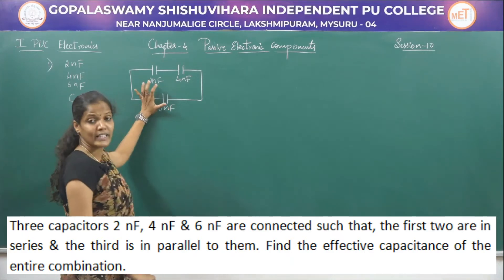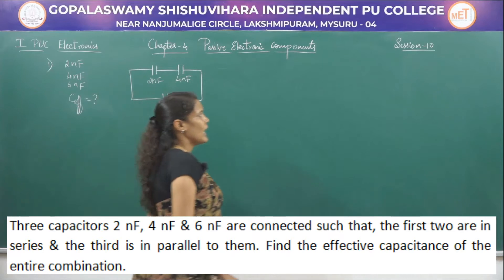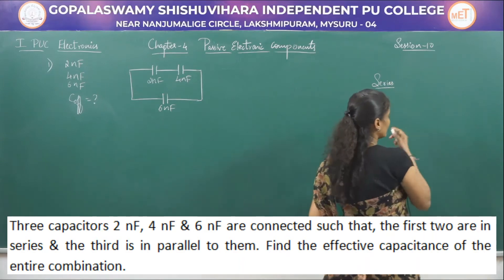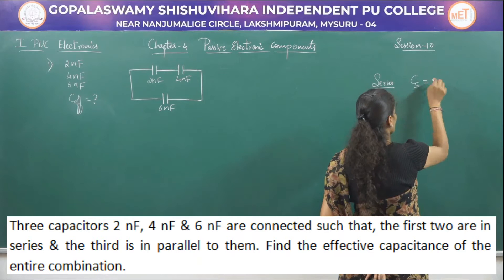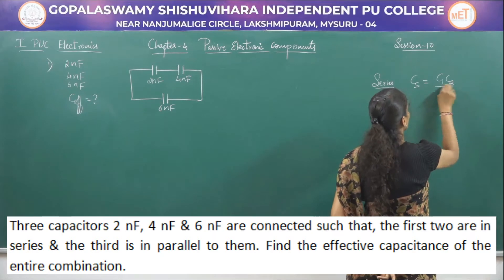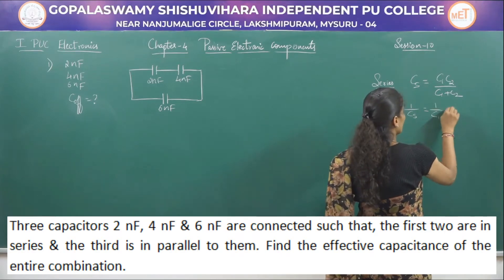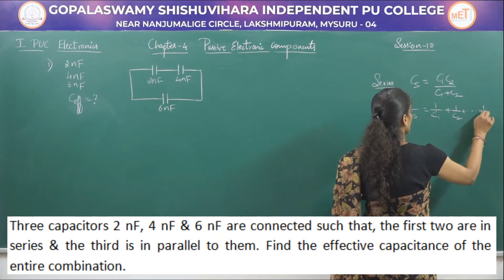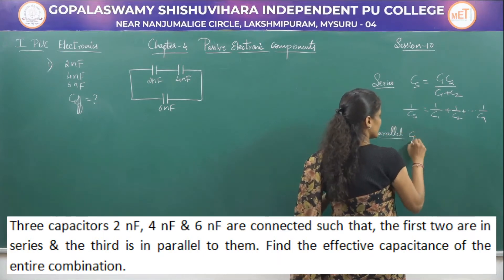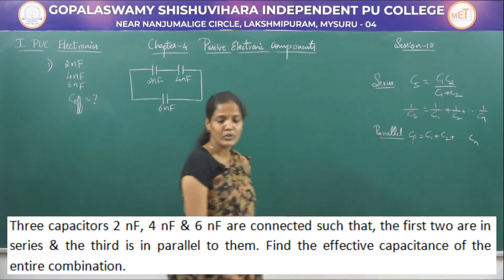Here, 2 nanofarad and 4 nanofarad are in series, and this series combination is in parallel with 6 nanofarad. The formula for two capacitors in series is: Cs = C1·C2 / (C1 + C2). For n capacitors in series: 1/Cs = 1/C1 + 1/C2 + ... + 1/Cn. For parallel combination: Cp = C1 + C2 + ... + Cn.